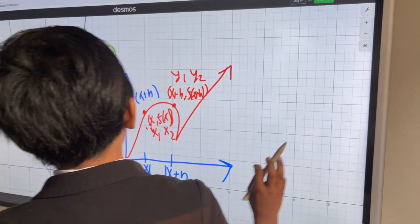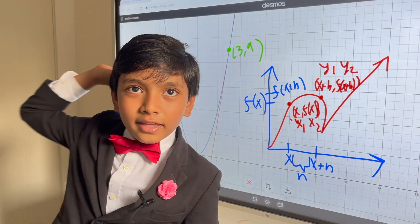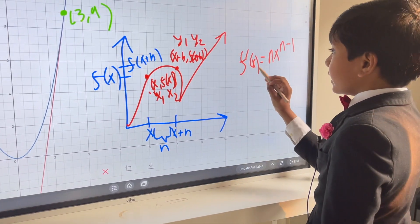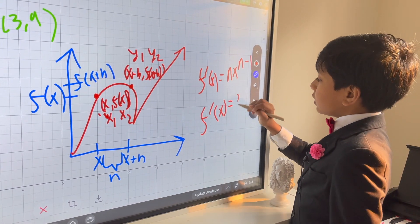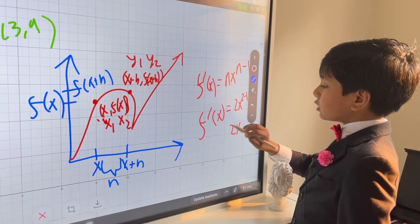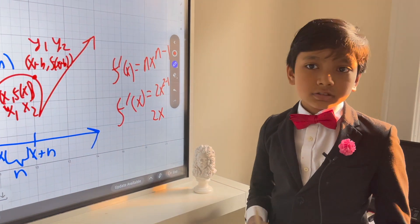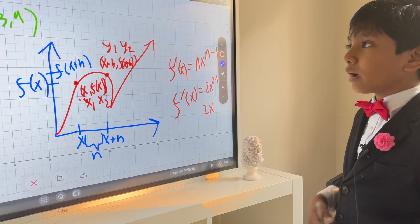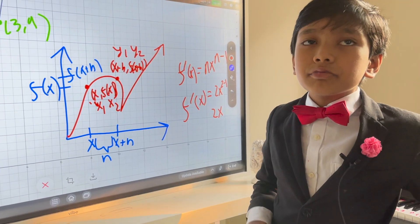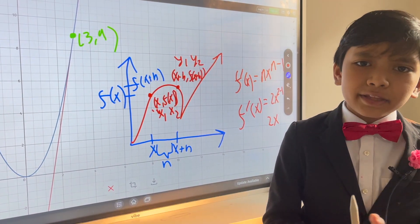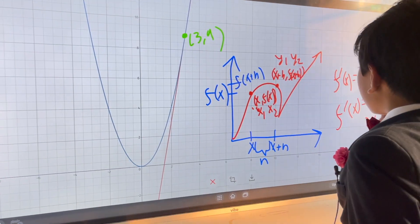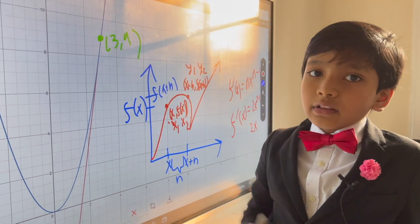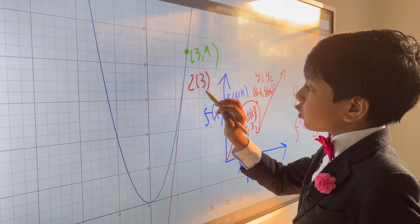Now I'm going to give you the power rule: if f(x) = x^n, then f'(x) = nx^(n-1). So for our function, n is just 2, which means f prime of x equals 2x to the power of 2 minus 1, which means the derivative of x squared is 2x. That's one of the most common derivatives. So x squared differentiates to 2x. Remember, the derivative gives the value of slope at any certain point.